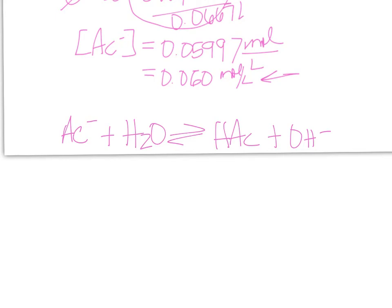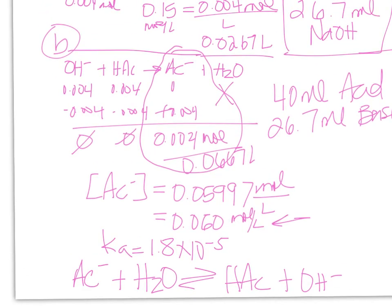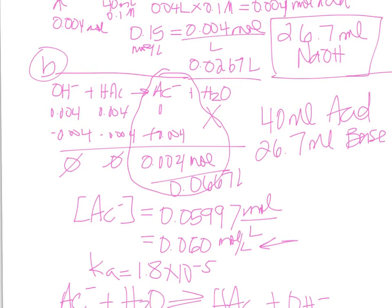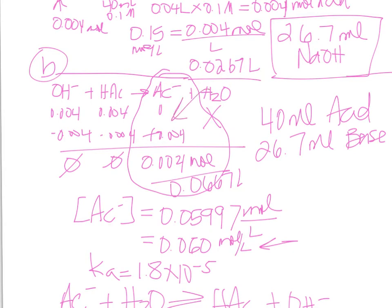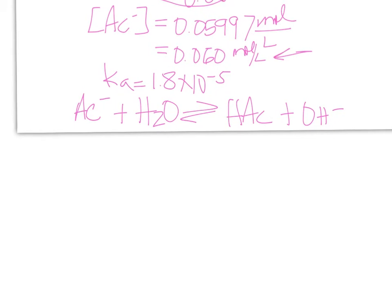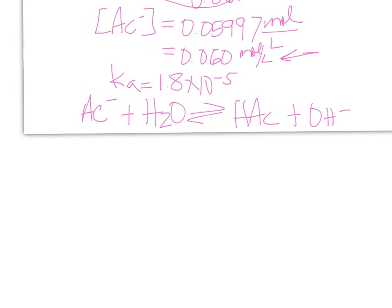So we're going to make acetic acid plus OH minus. It's a good thing to note that they did give us the Ka of acetic acid as 1.8 times 10 to the negative 5. This is a hydrolysis problem because what we had left over after this was the salt. We're going to utilize our information from our 0.060 moles of this: 0, 0.